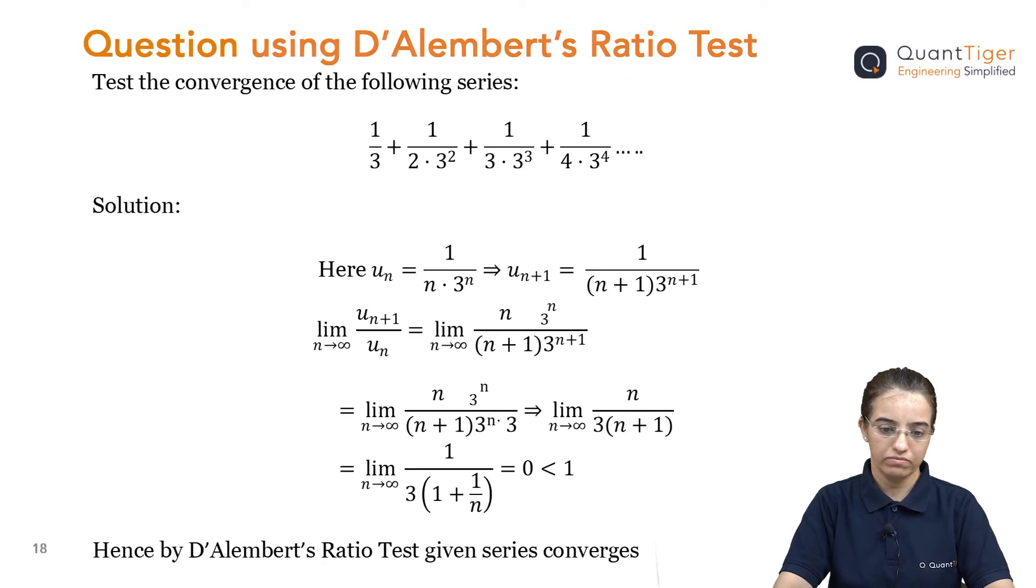So, let us use this, solve one question and then see how it works. Here the question is, this is the given series. As you see, there are different terms which are separated by addition: 1/3, 1/(2·3²), 1/(3·3³), and so on. So, if you look at the pattern here, you clearly see that based on this pattern, we have written u_n = 1/(n·3ⁿ). So, u_{n+1} is becoming 1/((n+1)·3^{n+1}). So, u_{n+1} also I have written here. Instead of n, I have replaced that with n+1. This is how we got the given u_n by looking into this pattern.